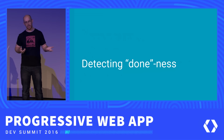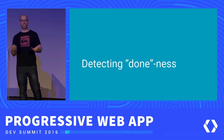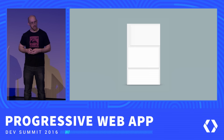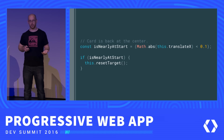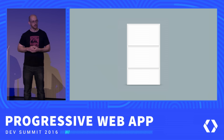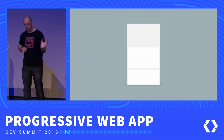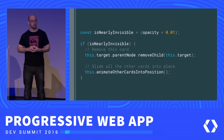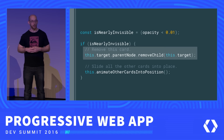Now we need to detect doneness — is this animation finished? If the card goes back to the middle, we ask: are you nearly at the start? If so, you're done — reset the target and allow the user to interact again. For the dismiss case: since we're also fading out the card, we ask if the opacity is really low — if it's nearly invisible, it's going. And we remove it from the DOM with removeChild.